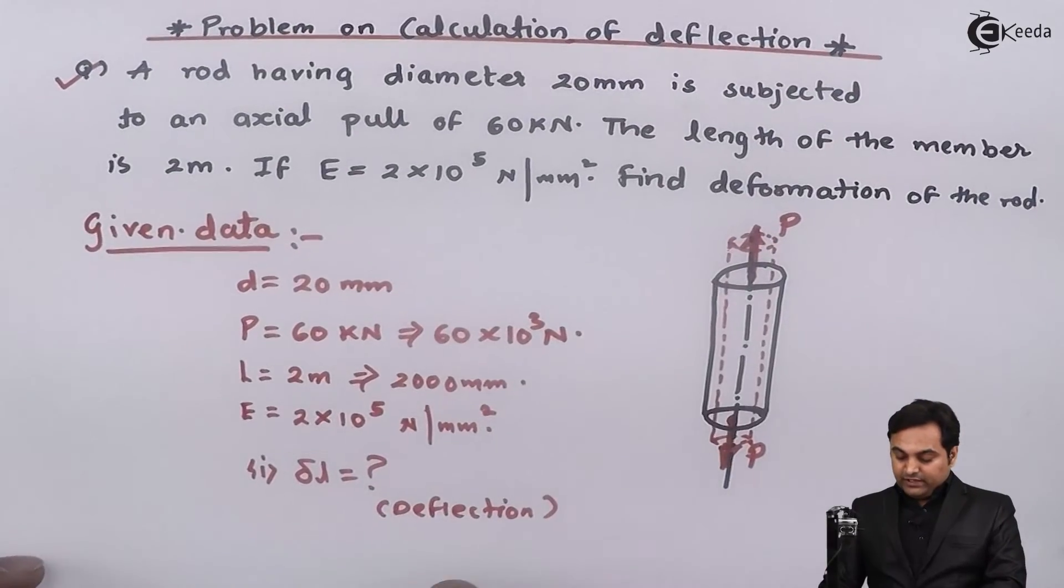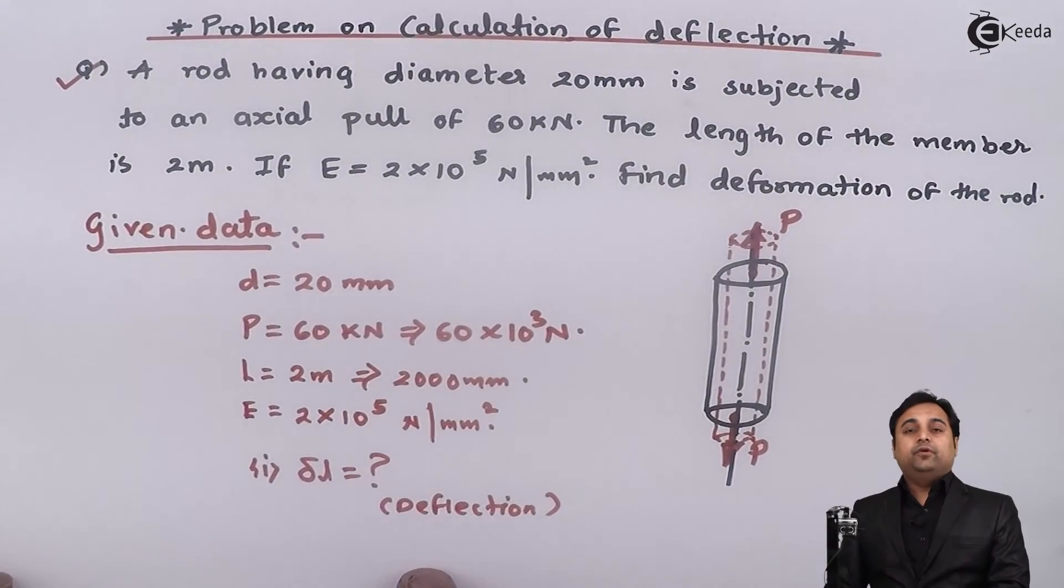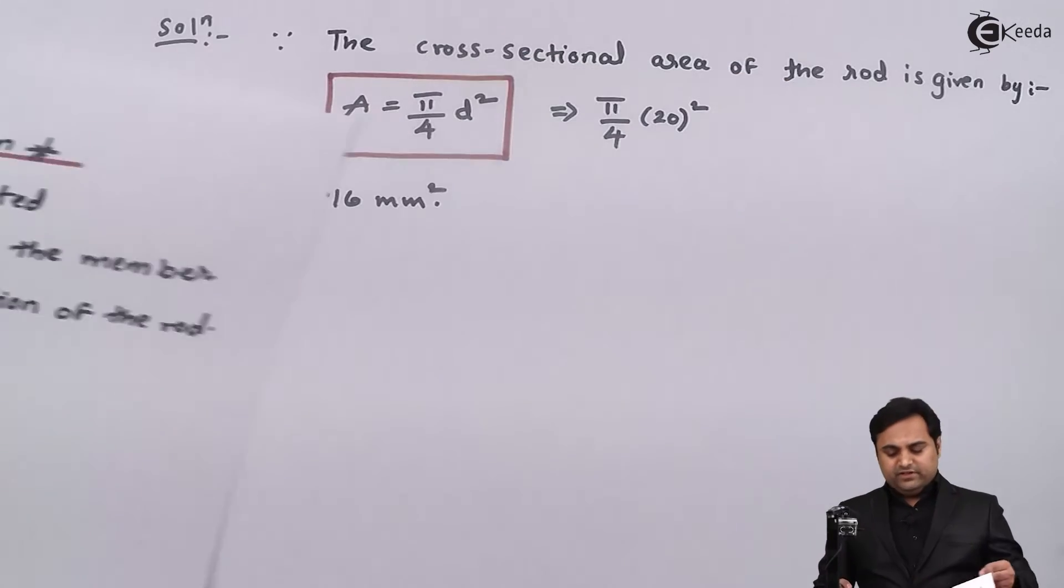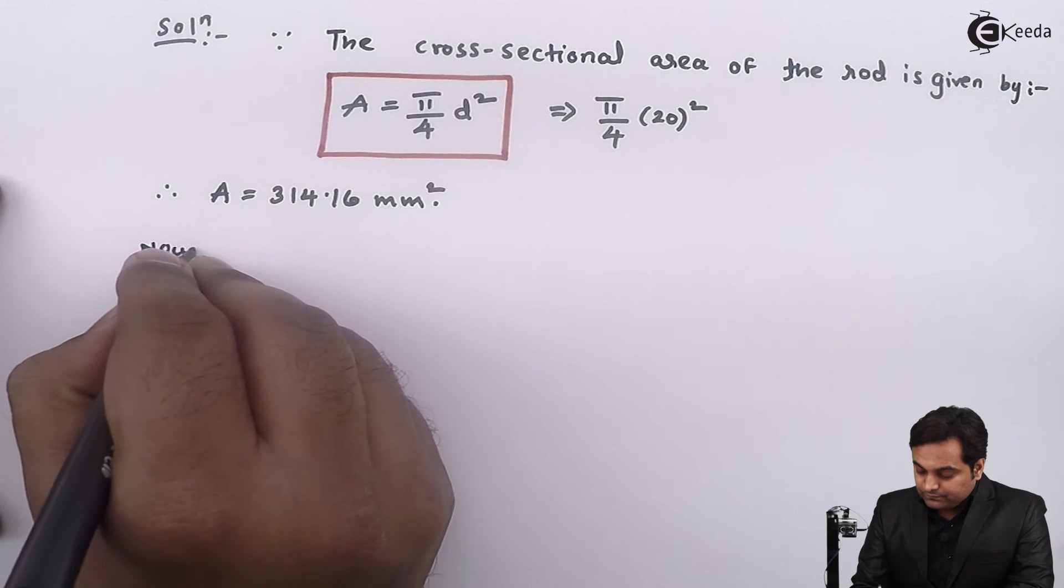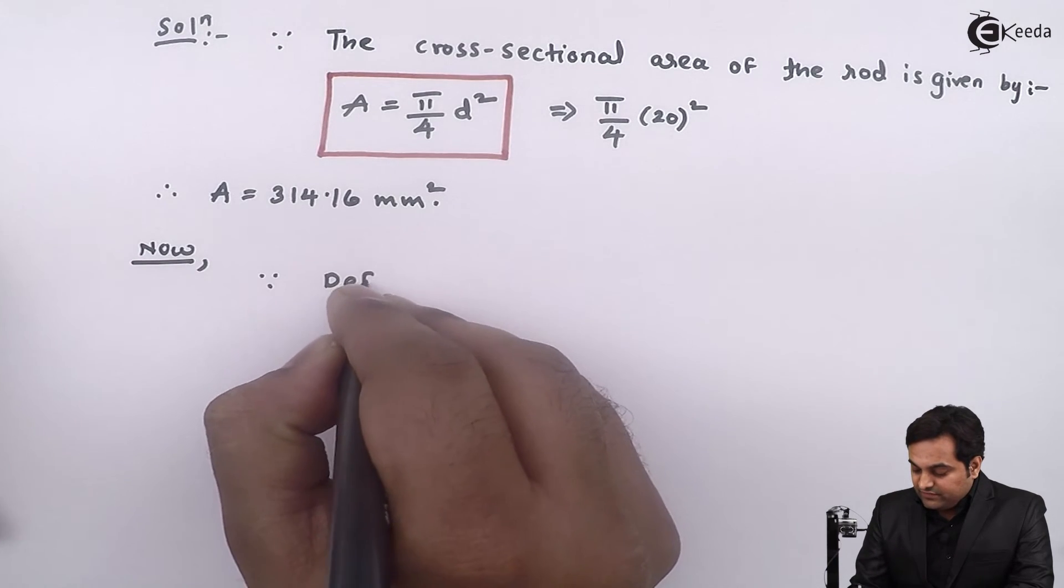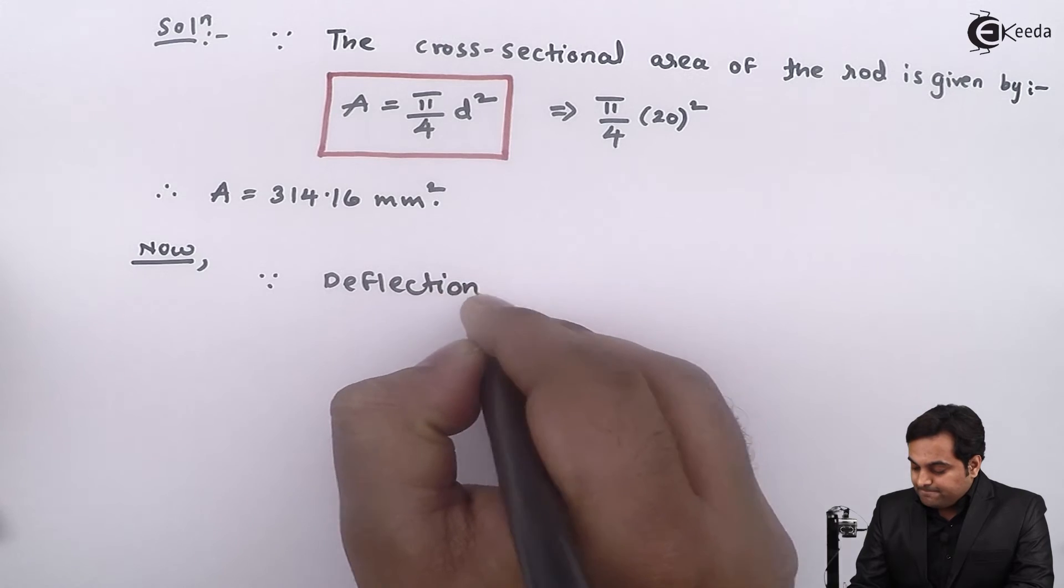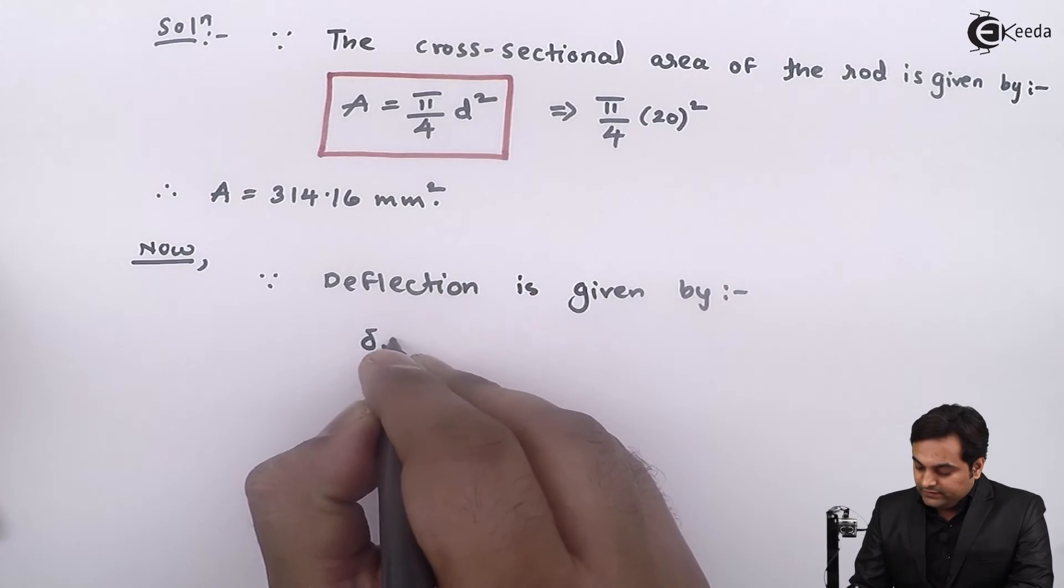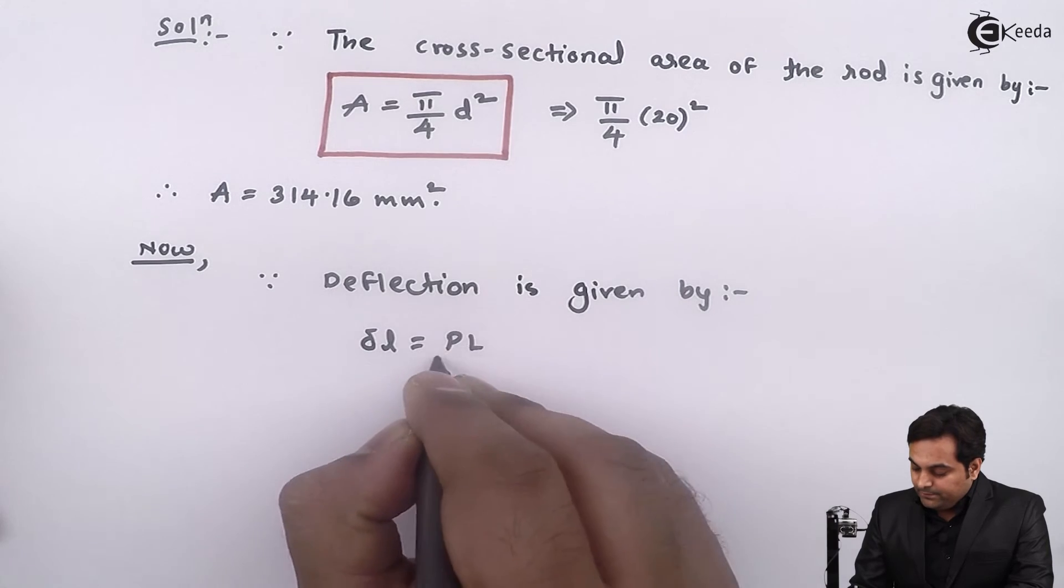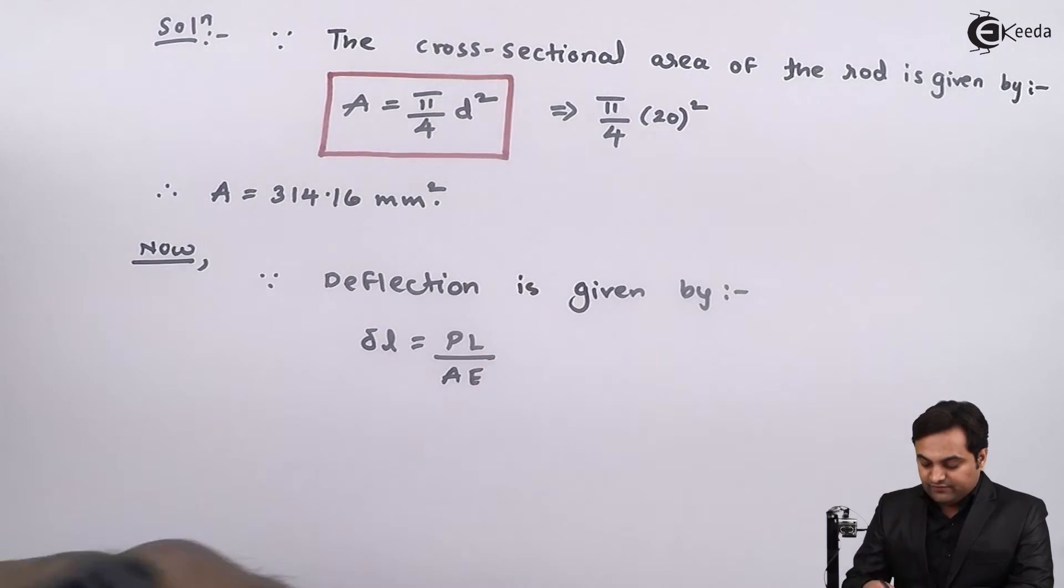Next, as we have to calculate the deflection, I use the formula for calculation of deflection. Since deflection is given by delta L is equal to PL upon AE, this is the formula of deflection.